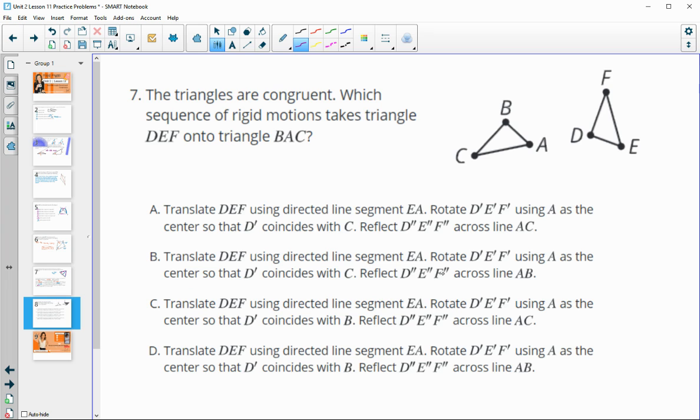Finally, number seven. The triangles are congruent, which means that we've got a sequence of rigid motions. So, which sequence of rigid motions takes DEF onto ABC? So, let me just draw DEF here, so we'll be able to move it. All right. So, first one says, translate DEF using directed line segment EA. So, we're going to take E and put it to A. So, we want to make sure that those are supposed to be matched up. So, E and A are both in the middle. So, they are corresponding parts. So, that's good.